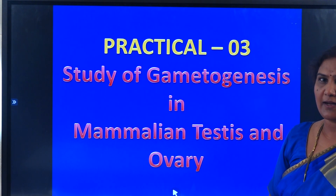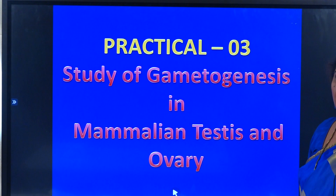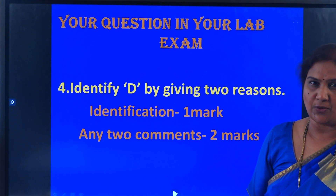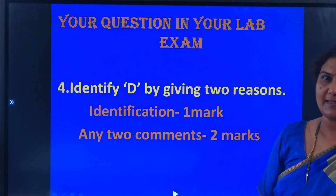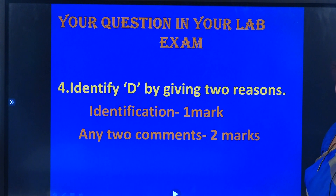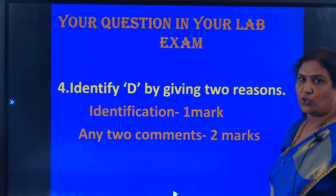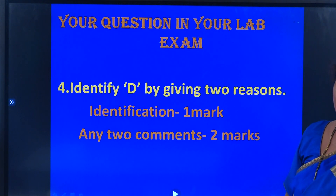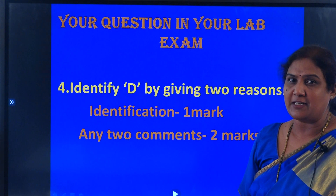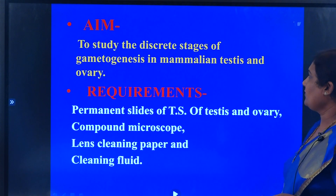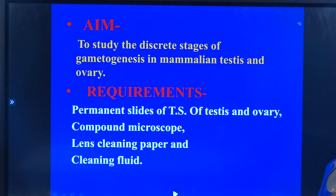I am supposed to teach you something about practical number three: study of gametogenesis in mammalian testes and ovary. Let me first introduce you as to how you're going to get the question in your practical exam. Your question goes like this — it will be the fourth question: identify D by giving two reasons. In the scheme of valuation, one mark is awarded for your identification of the slide, and two marks for any two comments. Children, don't limit it to only two — you write five, and we select whichever two we want.